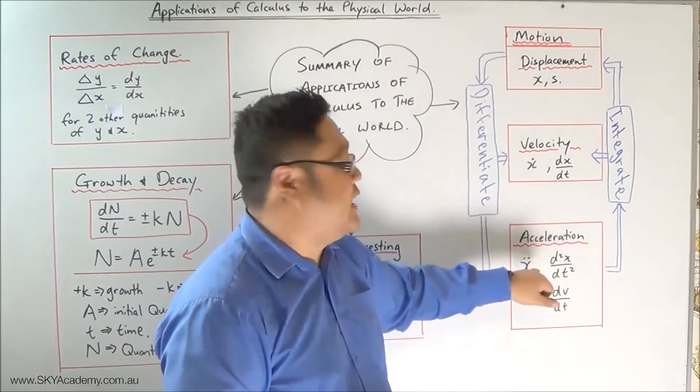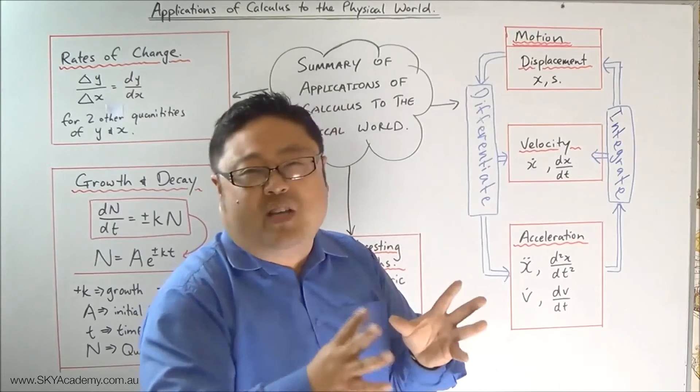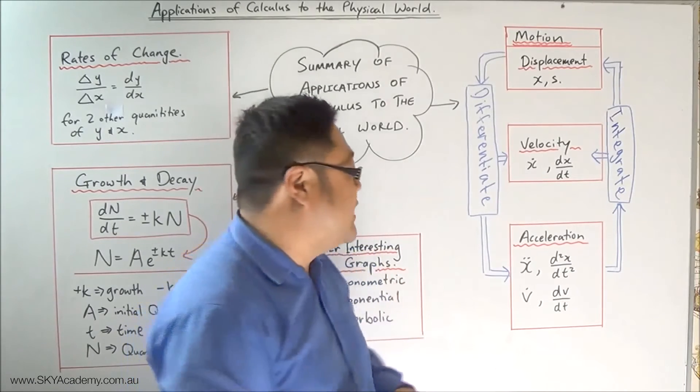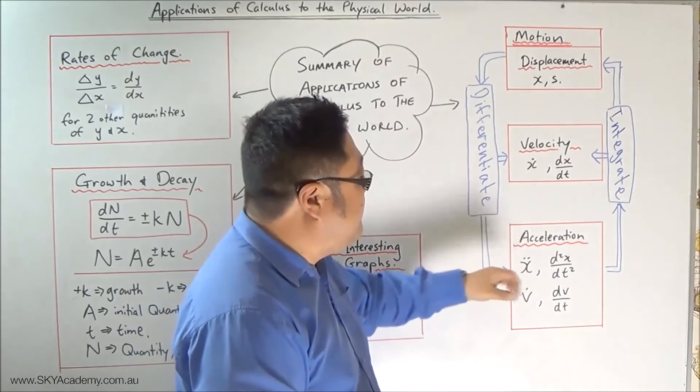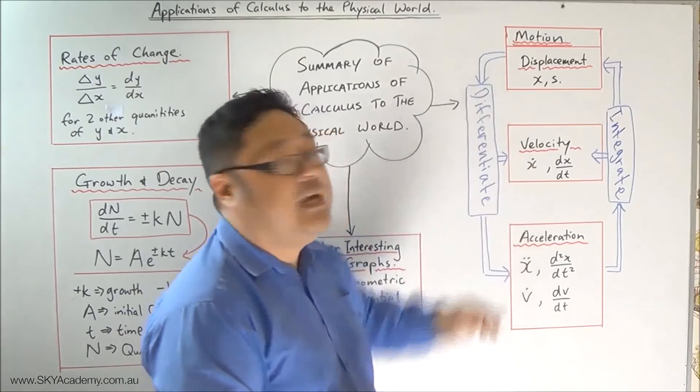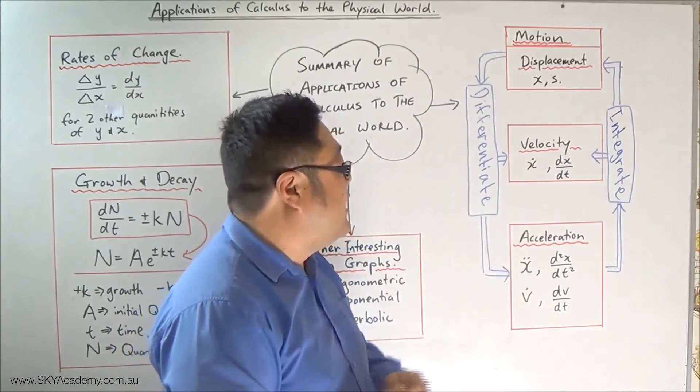And you can express that in Newtonian notation, which is probably more largely accepted. And then we also got to see that acceleration is the derivative of velocity.